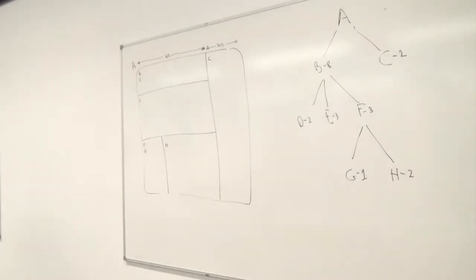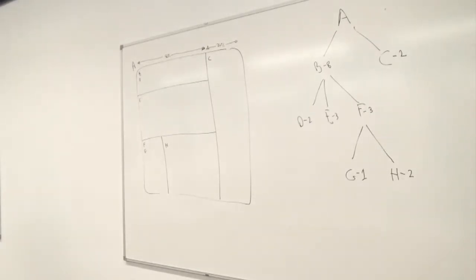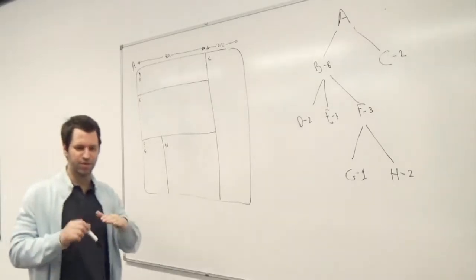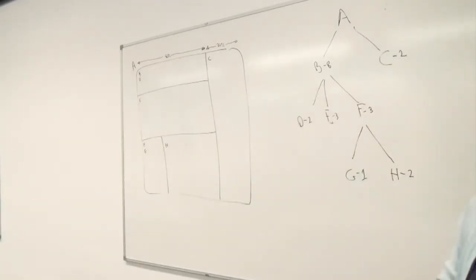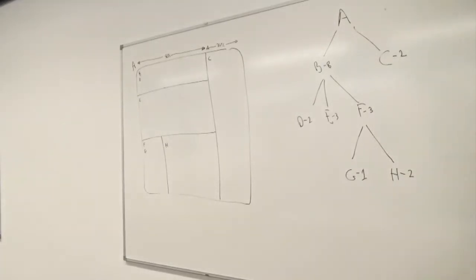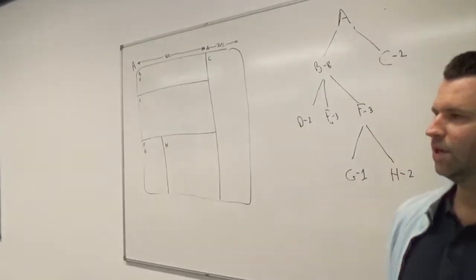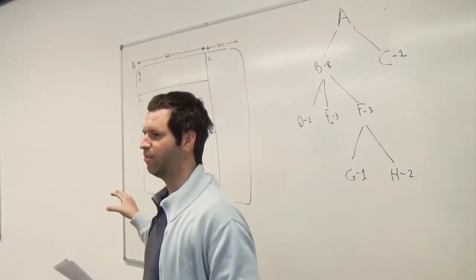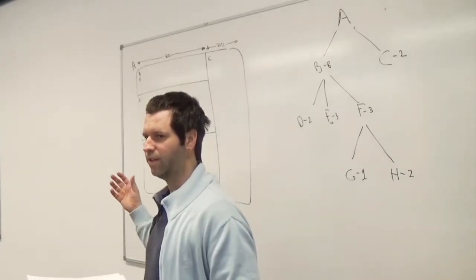Any other questions? We just went over two basic algorithms. Disk Inventory X does not use exactly this algorithm. It does use the recursive aspect with the subdivisions, and so does many i's. Does anybody notice what could be different about the many i's or Disk Inventory X implementation? It looks similar, but it's got a slightly different property.